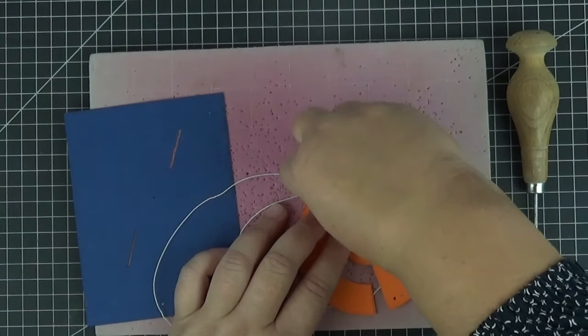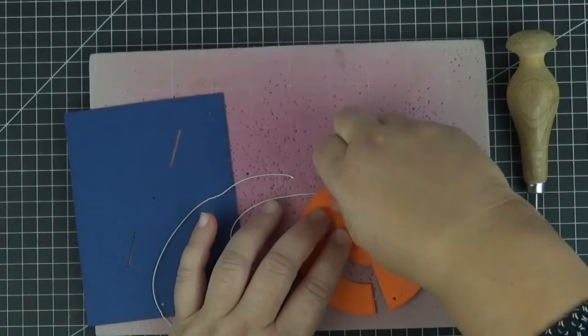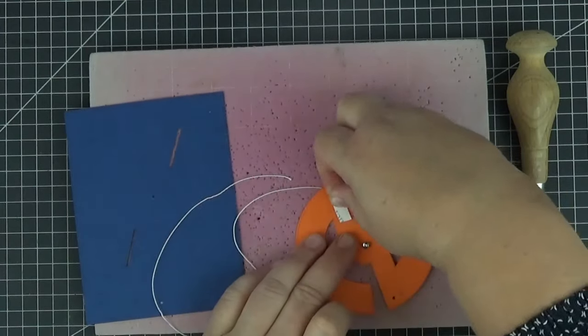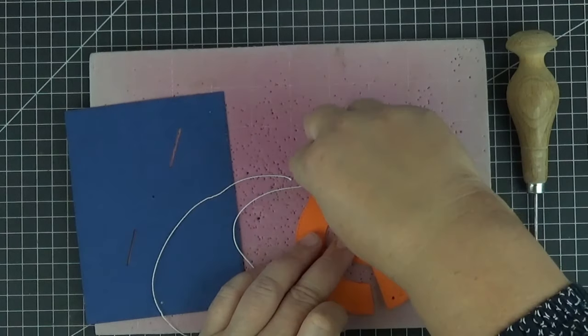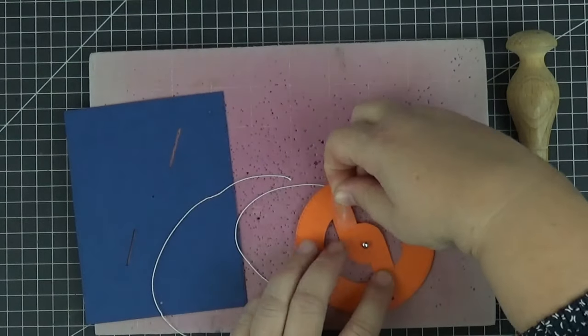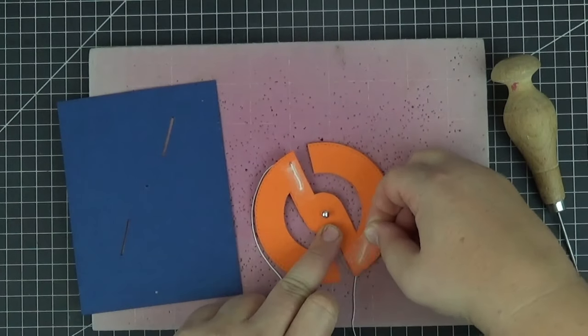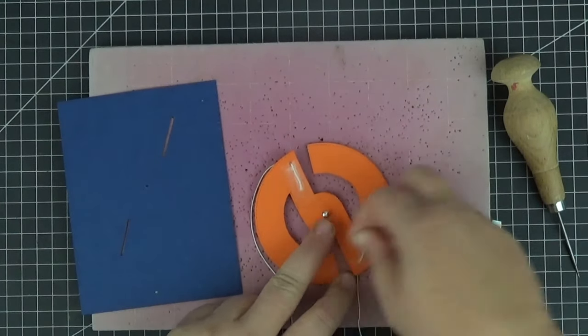So after punching the hole for string number one I just pulled it through from the front and attached it to the back with score tape. I put a strip both under and over the string and then I covered it with clear tape. I repeated these steps with string number two.